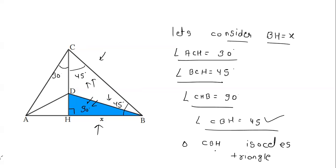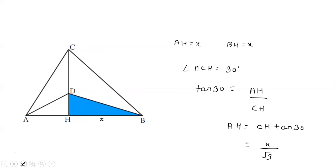From here we can say that triangle CBH is an isosceles triangle, because angle CBH and angle BCH are both 45 degrees. So if BH is X then CH is also X. So both sides are equal to X.